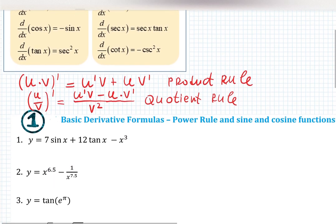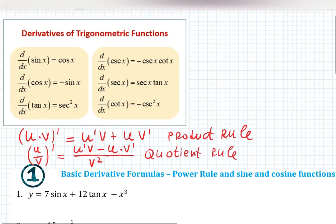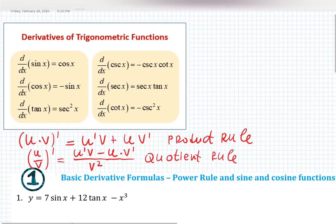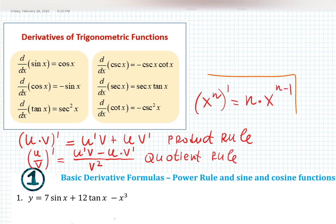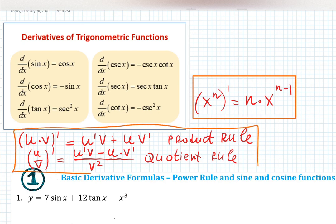Okay, let's start. Let's also review what is the derivative of x to the n. n goes down — we're multiplying by n, giving us n times x to the n minus 1. These formulas should be enough to complete all the problems for this video.